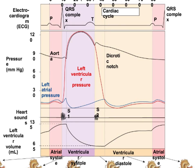Now let's take a look at Wigger's diagram, and we'll look at it step by step. We have the EKG, which we talked about earlier, and the pressure-volume diagram, with just a few extra things thrown in here.